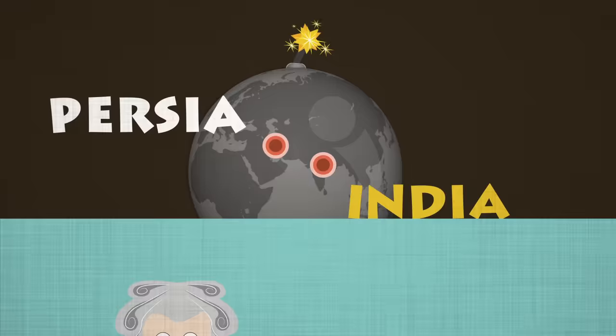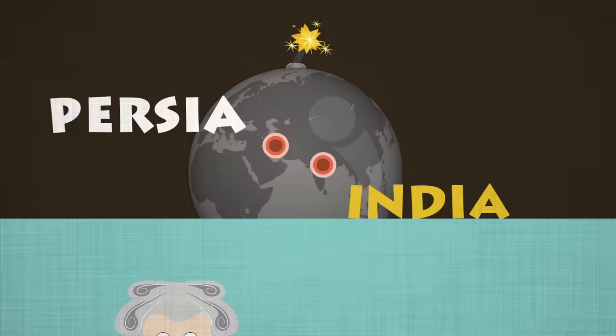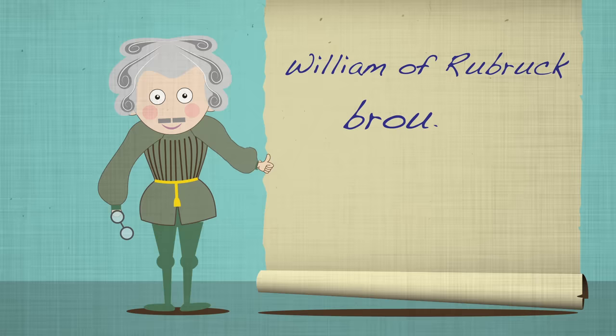William of Rubruk, a European ambassador to the Mongols, was likely responsible for bringing gunpowder back to Europe around 1254.